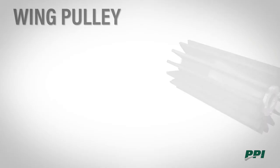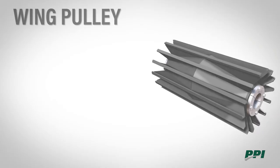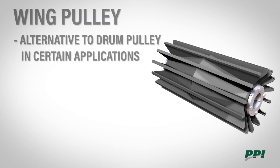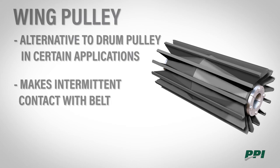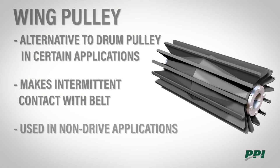The next pulley type we're going to be discussing is the wing pulley. It can be used as an alternative to the drum pulley in certain applications. It makes intermittent contact with your belt, providing a shaking action on the belt which can dislodge sticky material and provides somewhere for large stones to slide through the pulley without getting caught between your belt and the rim.